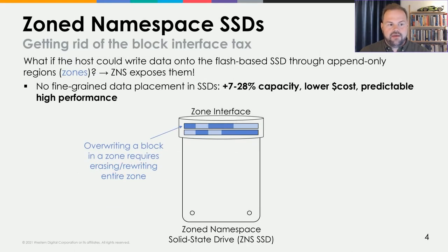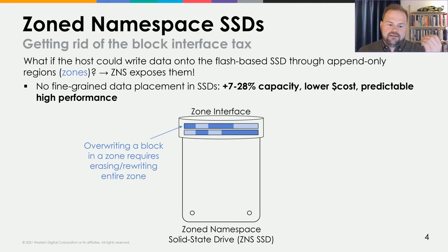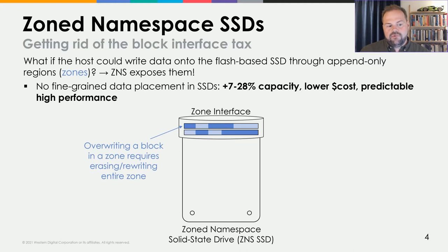So the industry came together around two years ago and started working on Zoned Namespace SSDs. The goal was to get rid of this block interface tax. What if we could write data onto flash-based SSDs through append-only regions? The idea is that we move the fine-grained data placement responsibility — data placement within an erase block — up to the host. When we do that, we gain 7% to 28% extra capacity because garbage collection is no longer necessary for fine-grained data placement. We reduce the cost, and we also get predictable high performance.